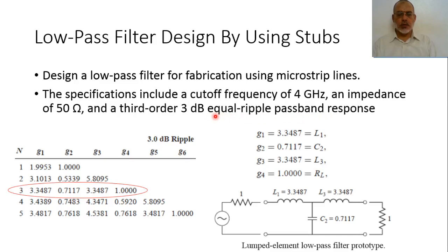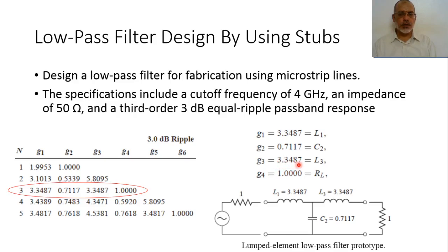We are going to design a Chebyshev filter with 3 dB equiripple response. By going to the table of the 3 dB equiripple for the third order, the element values are: G1 equals 3.3478, G2 equals 0.7117, G3 equals 3.3487, and G4 equals 1.